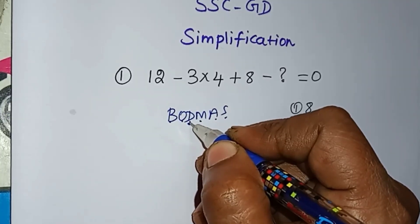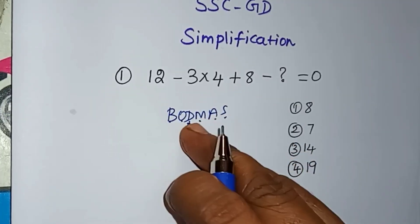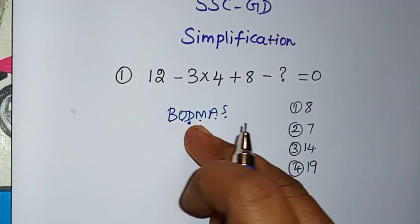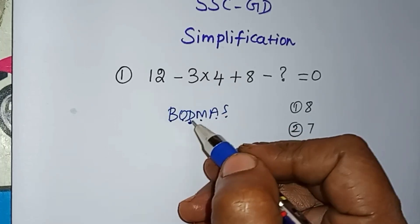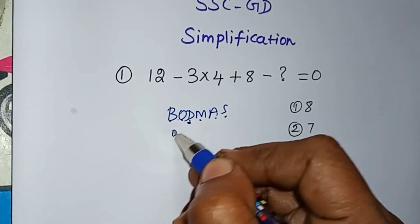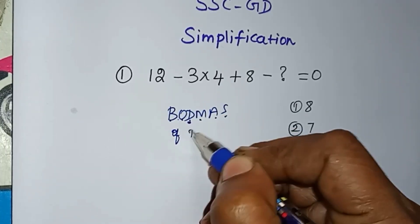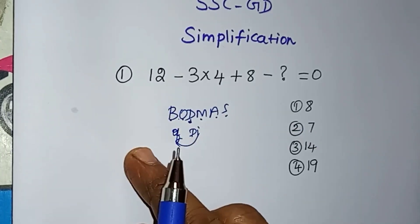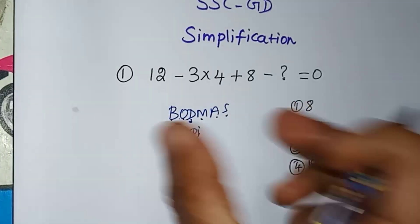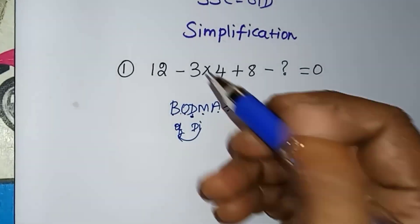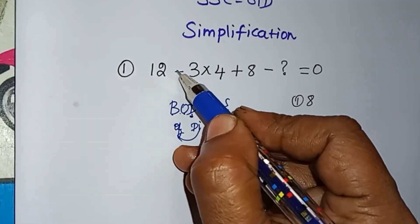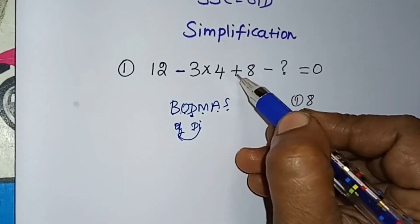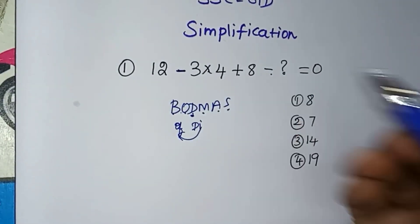In division, we have the priority of multiplication. In 'Of', we have the priority of division. In the BODMAS rule, there is a minus, there is a multiplication, a plus, a minus.